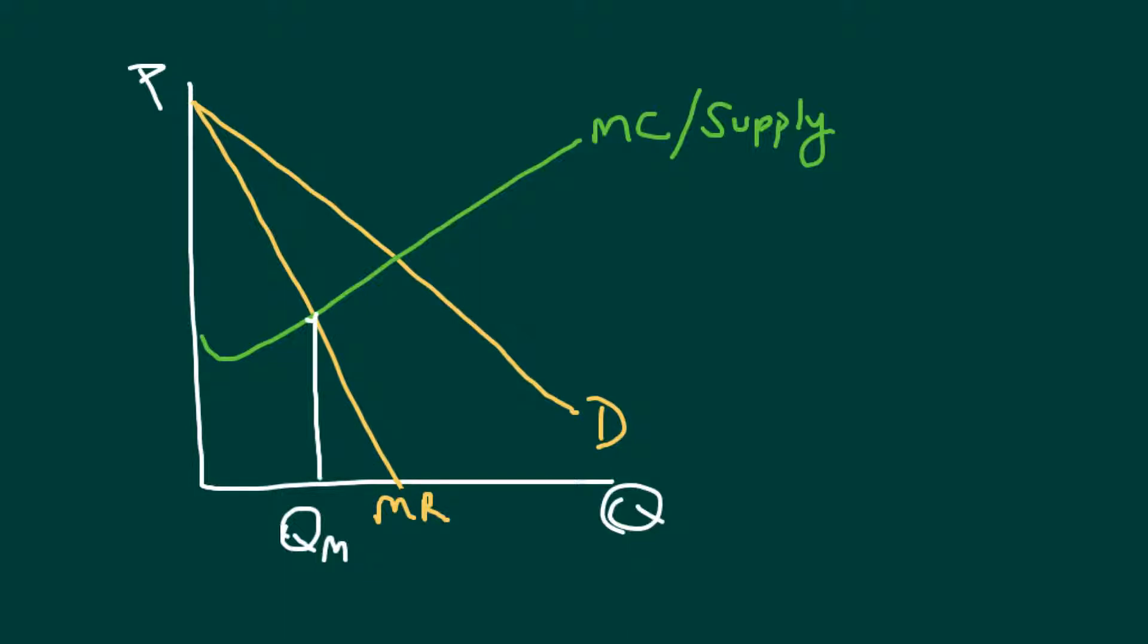If only there was a curve that just happened to tell me what price is associated with different quantities. Oh, there is. So I take my quantity M that the monopolist is going to do, I'm going to come up to the demand curve and apparently find that that's the price I'm going to charge. Okay. So there's your PM QM.